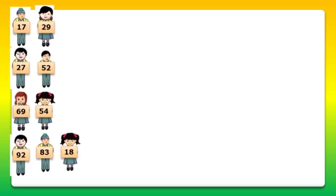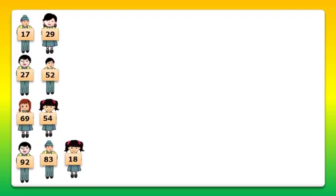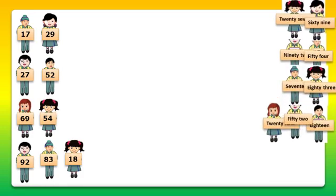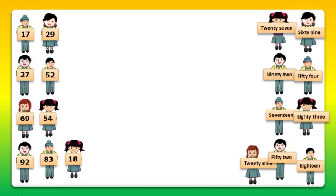We have some students who are carrying the numbers. Now we will call some more students holding the flashcards with the same numbers, which we have taken in one side, the same numbers are written in words and that will be the second group. To start the activity, first of all we will call one student from group 1. And here it's 29.